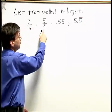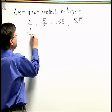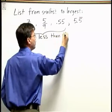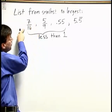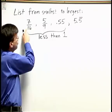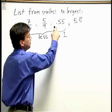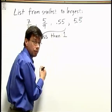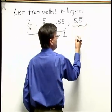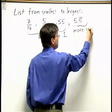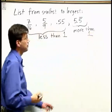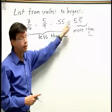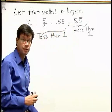Notice that 7 sixteenths, 5 ninths, and 0.55 are all less than one whole. When a fraction has a smaller number on top than below, we know the fraction is less than one whole. Our decimal 0.55 has zero whole number part, so it's also less than one whole. But 5.5 with the bar is more than one, so that number has to be larger than the other three — we already know it's the largest.